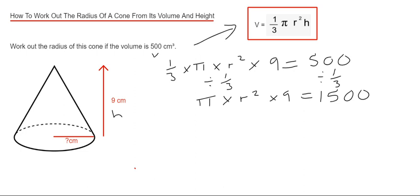So the next thing we're going to do then is divide both sides by 9. That will give me pi times r squared equals, so we can leave this as a fraction, 1500 over 9.